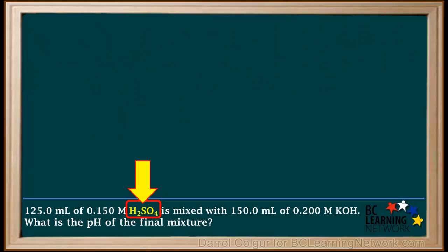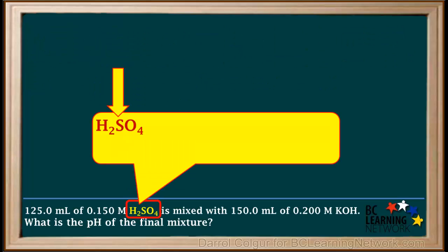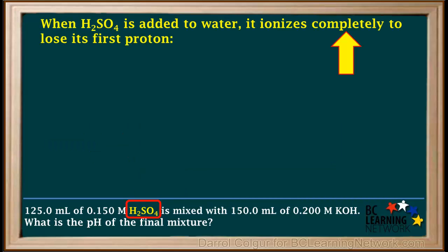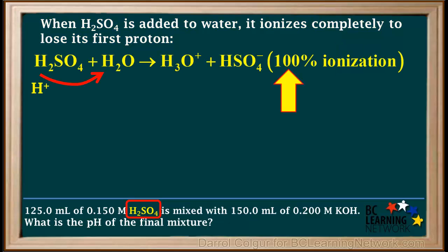Just a few words about sulfuric acid H2SO4. H2SO4 is a diprotic acid, which means it has two protons it can lose. As soon as H2SO4 is added to water, it ionizes completely to lose its first proton. 100% of the H2SO4 molecules lose one proton to form hydronium and hydrogen sulfate ions.